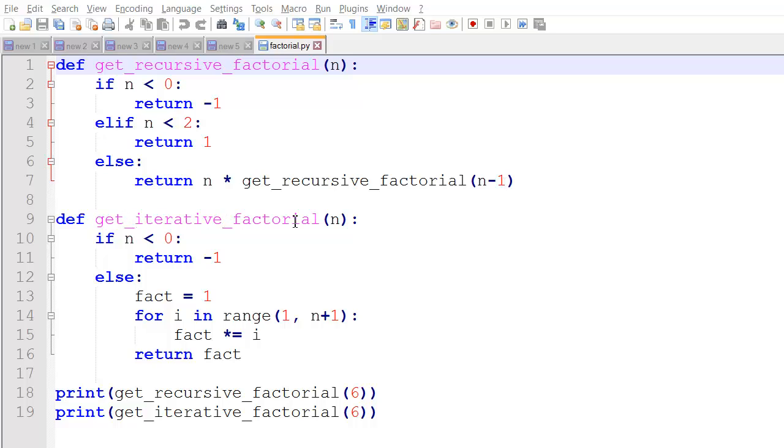And the get iterative factorial also accepts an integer n. It does the same error check for values less than zero. And then we set our running factorial counter to one to initialize it. We start our loop for i in range one to n plus one, which actually just counts to n since it's non-inclusive. And then we multiply fact by i each time through the loop, and then we return fact.